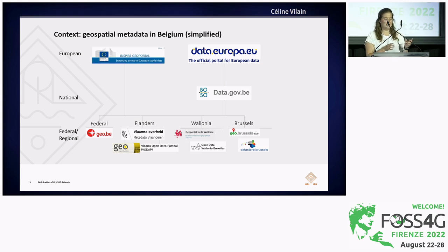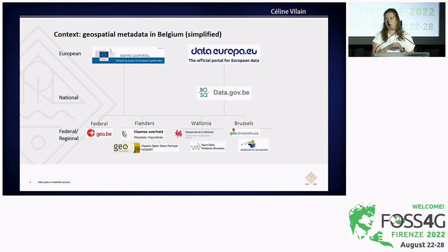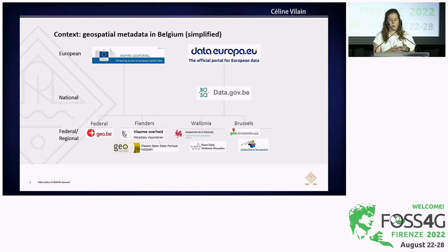Belgium is a federal state with three official languages and three regions. About geospatial metadata management, we have a bottom-up approach where local metadata portals are harvested by a higher-level portal. In Belgium, you have four portals on the same level: the three regional portals of Flanders, Wallonia, and Brussels, and also the portal on the federal level. I'm working on that federal level, and the National Geographic Institute is responsible for maintaining Geo.be.